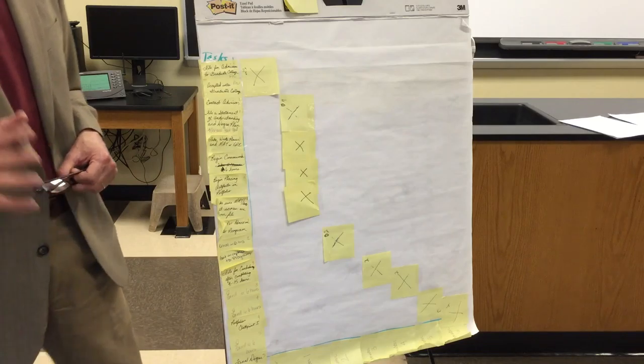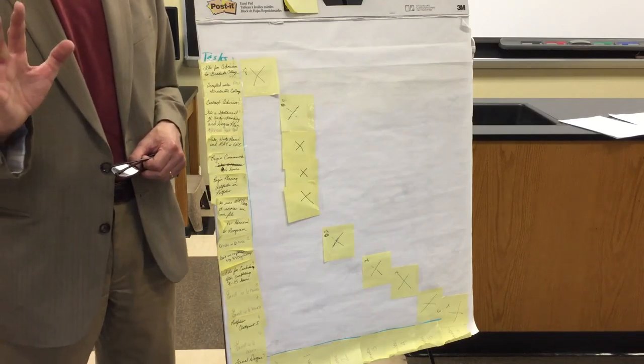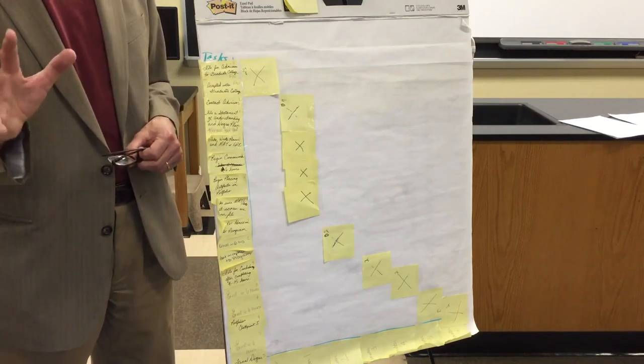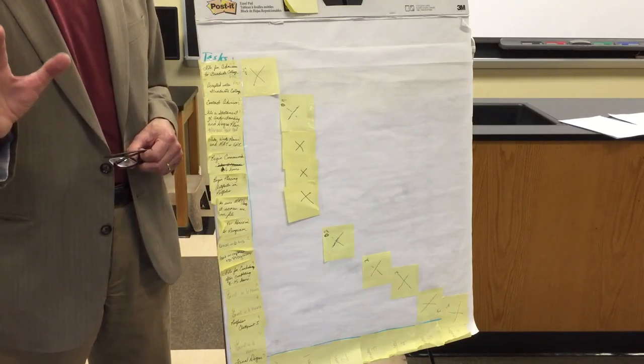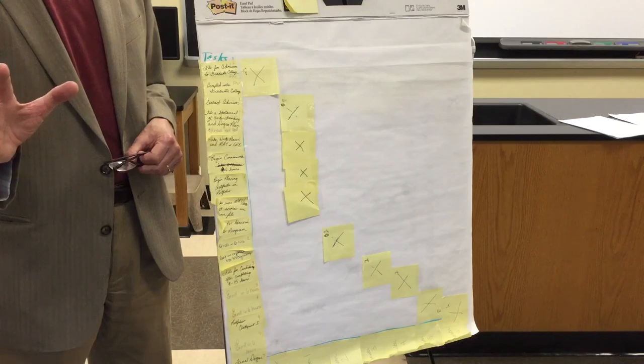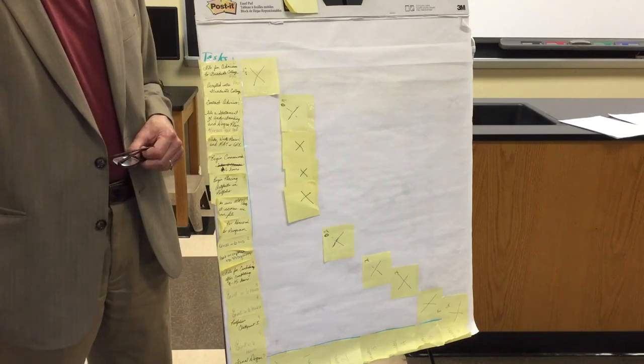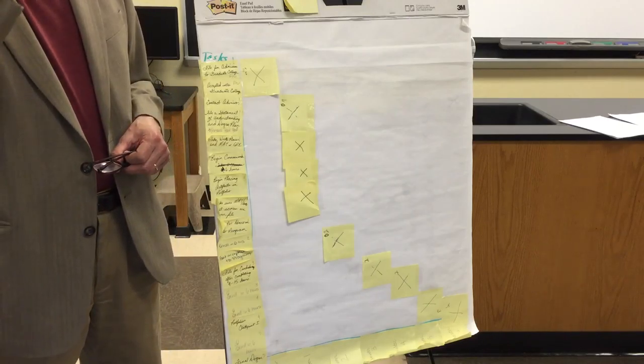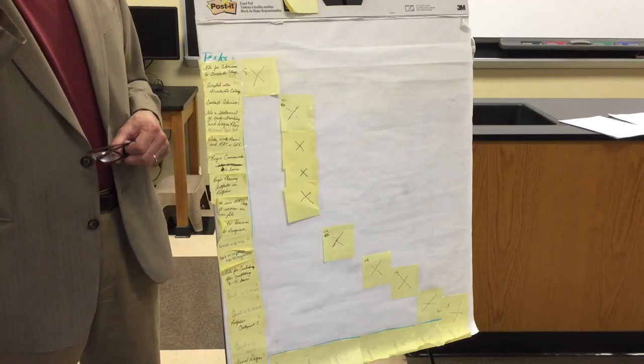So what were the seven resource variables that you had to take care of during the plan? Time, many people, materials, space, information, and programs.